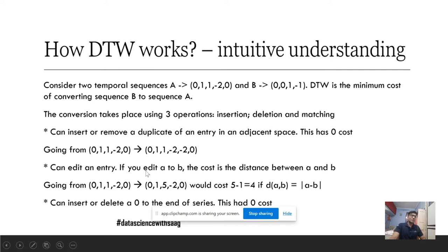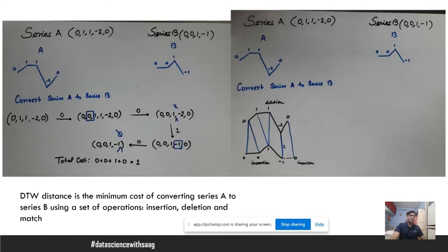We can edit an entry. If you edit A to B, the cost is the distance between A and B. So if we measure the distance between A and B as |A-B| or the absolute value of A minus B, then the cost of going from 1 to 5 would be 4. We can insert or delete a 0 at the end of the series. This has zero cost.